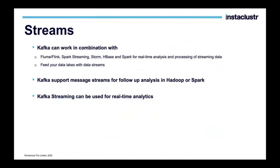Kafka can work in combination with other technologies — for example, Flume, Flink, Spark Streaming, Storm, HBase, and Spark for real-time analysis and processing of streaming data. It can also feed your data lakes with data streams — a very natural use case for Kafka. Kafka supports message streams for follow-up analysis in Hadoop or Spark, and it is built to integrate very well with those technologies. Kafka Streaming can be used for real-time analytics, which is a very huge use case where Kafka is considered a primary go-to tool.